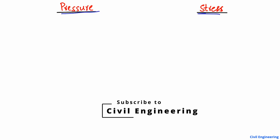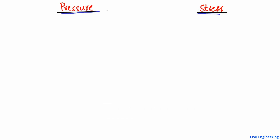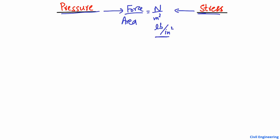I'm going to explain this with the help of examples and figures so it will be very easy to understand. Basically, both are represented by the same formula — force per unit area — and they have the same units, for example newton per meter square or pound per inch square. So they have the same units and the same formula, but how can we differentiate them, and why are there two different names?